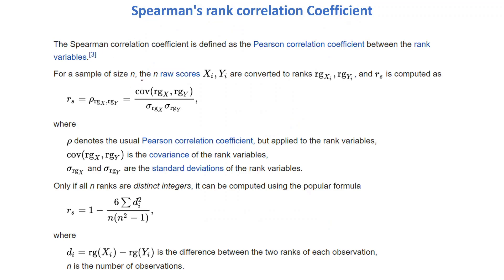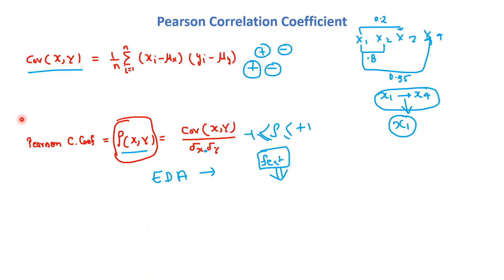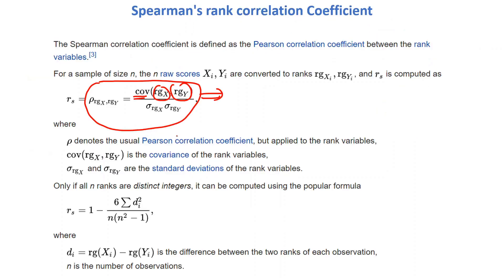The formula for the Spearman rank correlation coefficient uses the covariance of Rgx and Rgy. To explain more clearly: in the Pearson correlation formula we use covariance of x and y divided by standard deviation of x and standard deviation of y. We can write the Pearson correlation coefficient as covariance(x, y) divided by standard deviation of x times standard deviation of y.